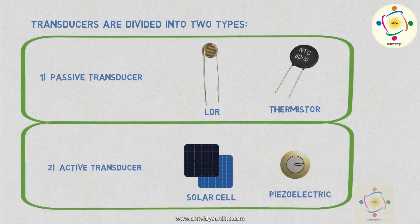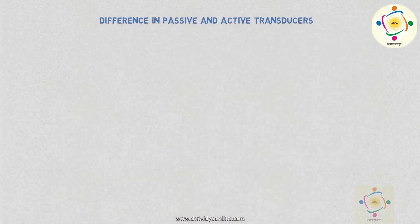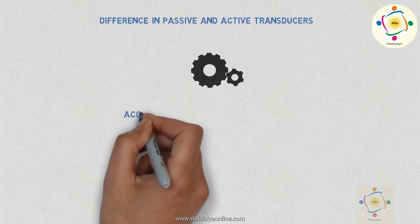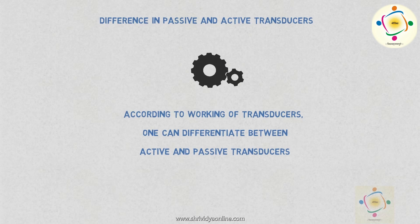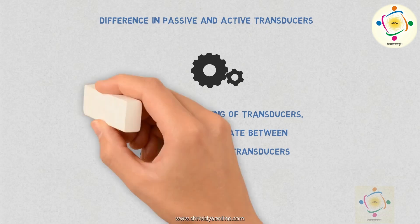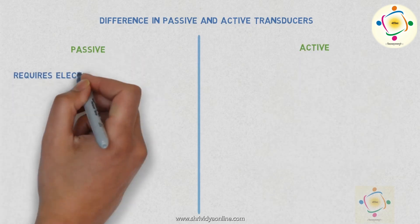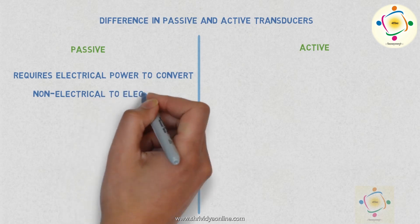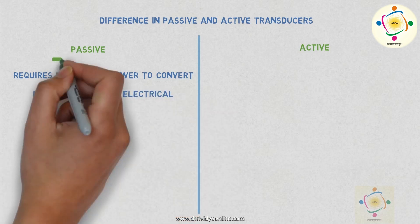Let us explore what is the basic difference between active and passive transducers. According to their working one can easily find out which one is passive and active transducers. A transducer which requires electrical power to convert non-electrical quantities into electrical quantities is known as a passive transducer.